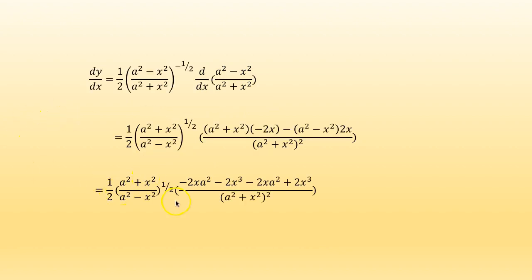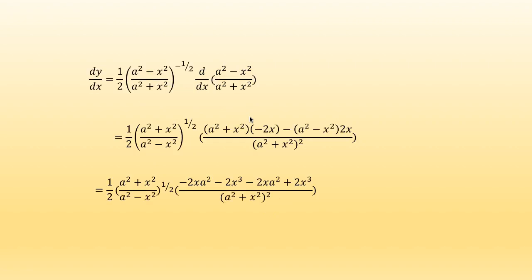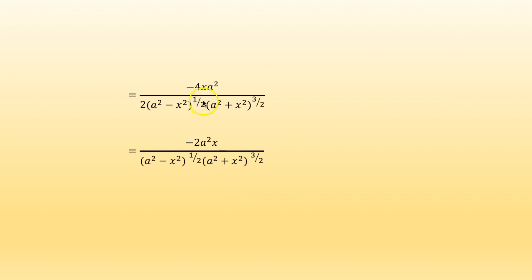Combining, (a²+x²)^(1/2) from the numerator cancels with part of (a²+x²)² in the denominator, giving (a²+x²)^(3/2) in the denominator. So the final answer is −2a²x / [(a²−x²)^(1/2) · (a²+x²)^(3/2)].